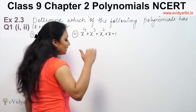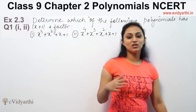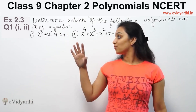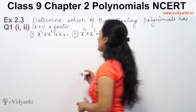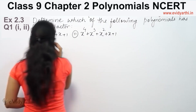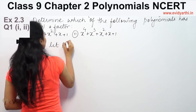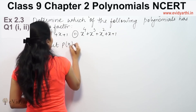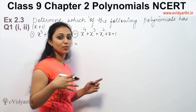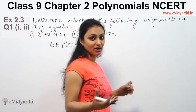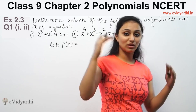So, if x plus 1 is completely divided with remainder 0, it is a factor; otherwise it is not. We'll use the Remainder Theorem. Here you can earn marks by applying the remainder theorem. If you want more marks, you can also write the long division method.